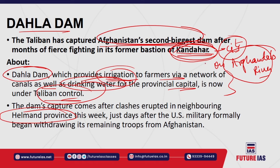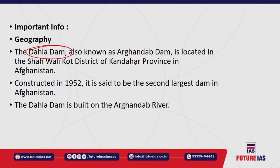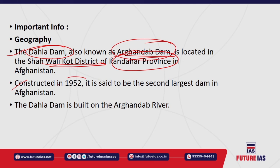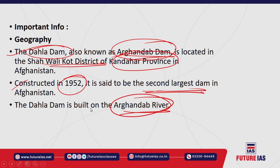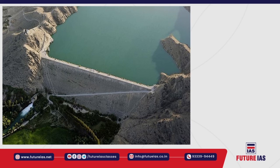Regarding the Dahla Dam: it is also known as the Arghandab Dam because it is located on the Arghandab River. It is specifically located in the Shahwali Kot district of Kandahar province in Afghanistan, around 40 kilometers north of Kandahar. It was constructed in 1952, is the second largest dam in Afghanistan, built on the Arghandab River.